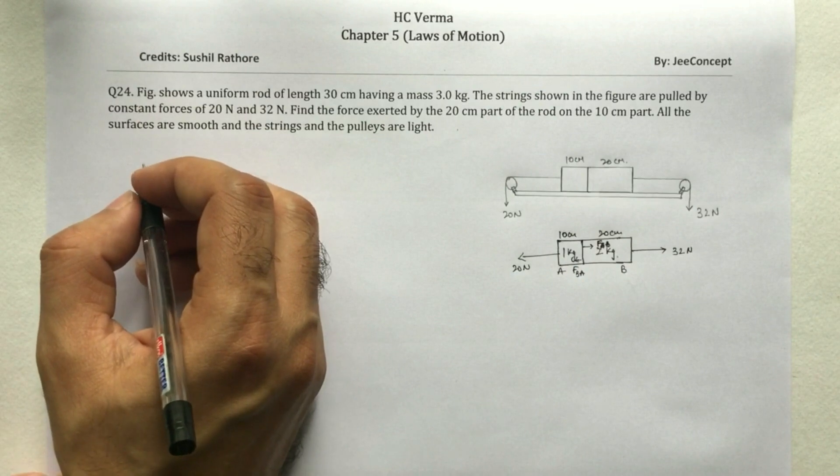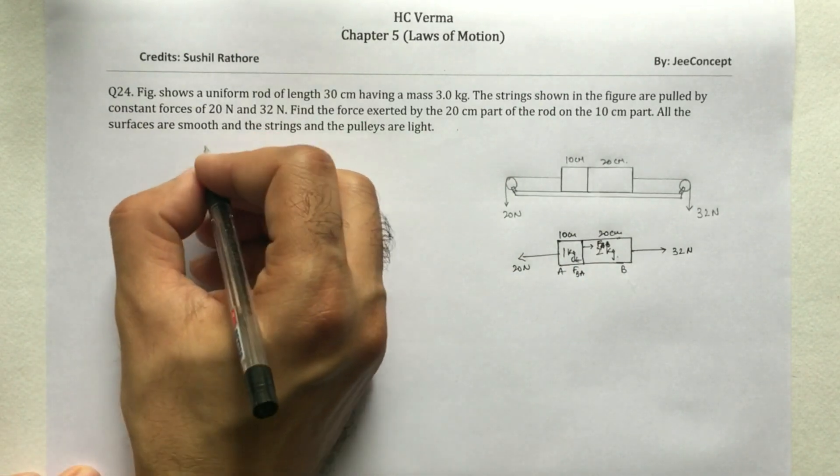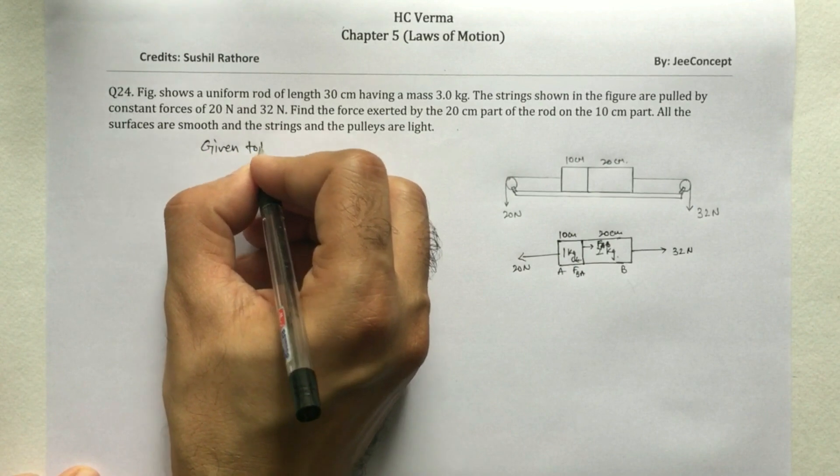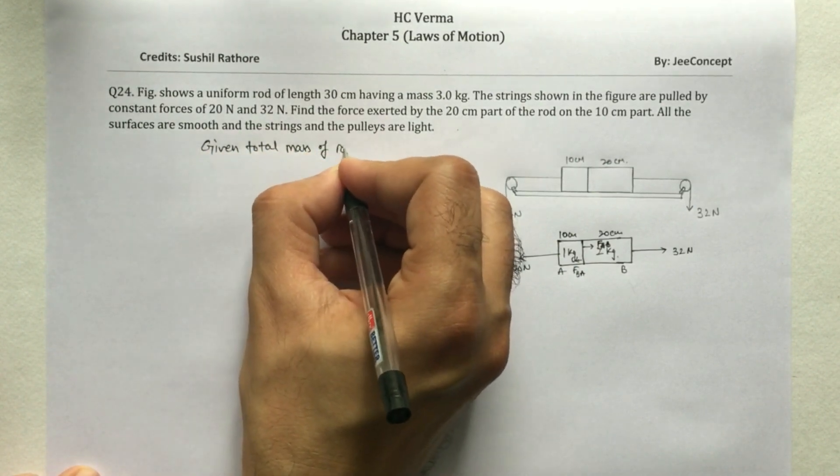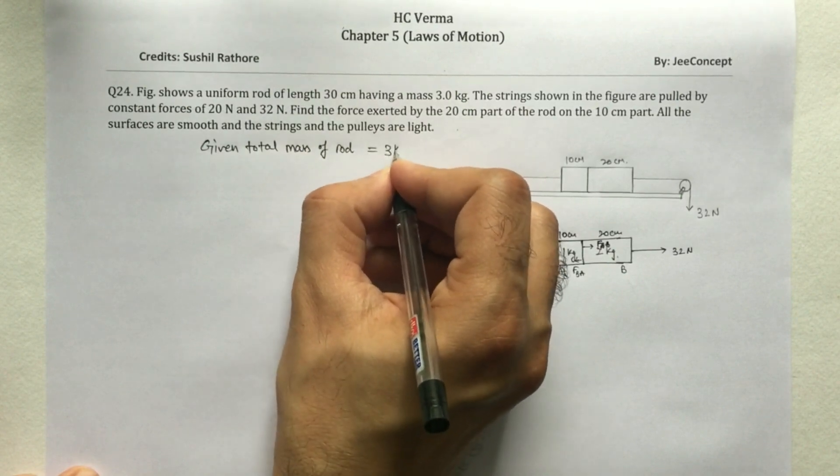So I'll say given total mass of rod is 3 kg.